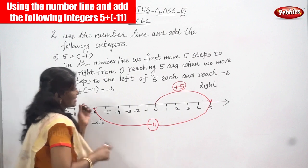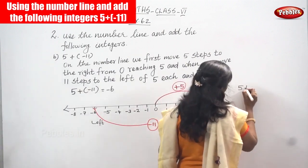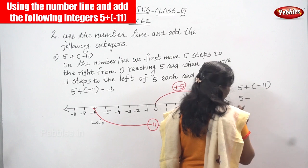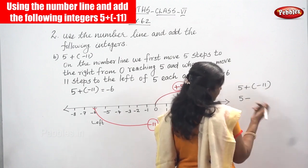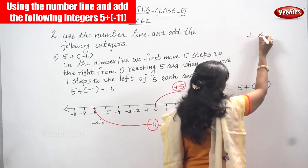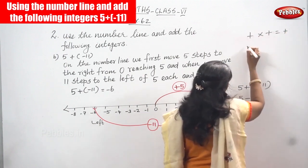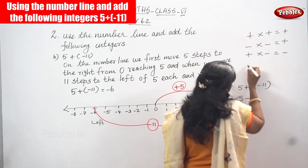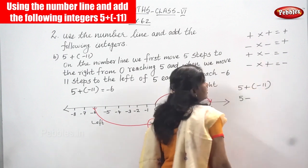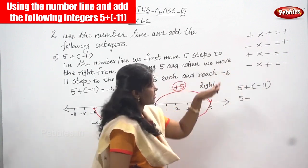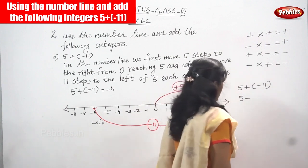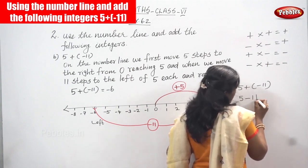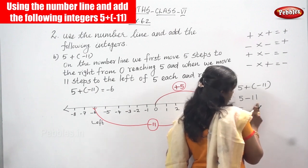So 5 plus minus 11 — plus into minus gives minus. The symbol rules are: plus into plus gives plus, minus into minus gives plus, plus into minus gives minus, and minus into plus gives minus. These are the formula for signs. So plus into minus gives minus 11, meaning you are going to subtract only, because this is a different sign.